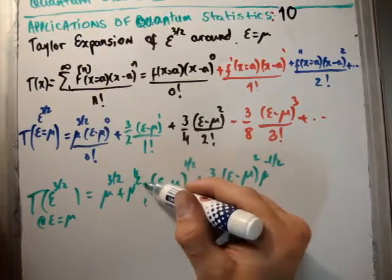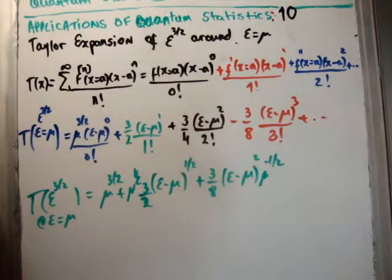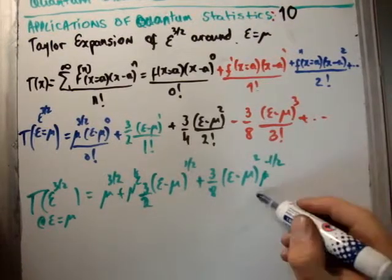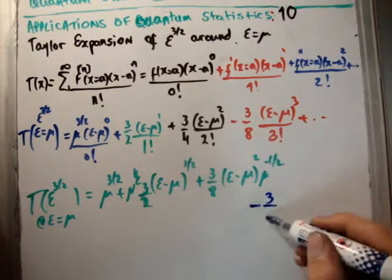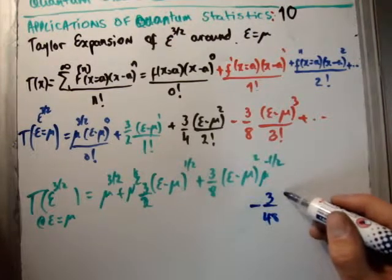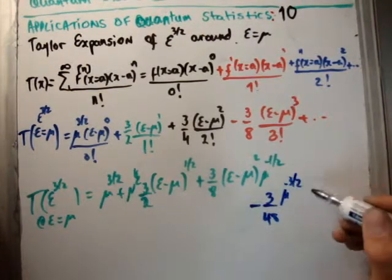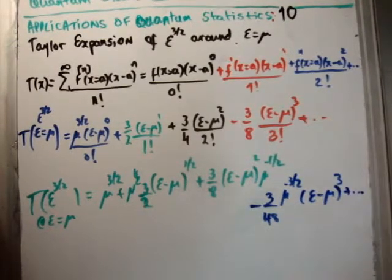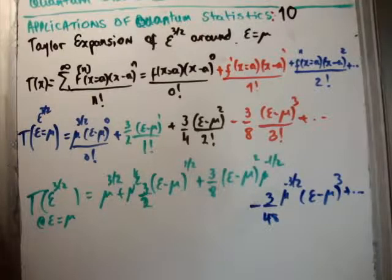And the last term I'm going to add is minus 3/48 μ^(-3/2) (ε - μ)³. And that is the Taylor expansion of ε^(3/2) around ε equal to μ.